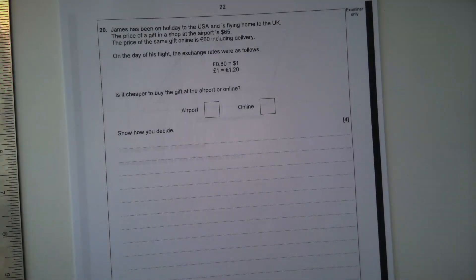Question 20. James has been on holiday to the USA and is flying home to the UK. The price of a gift in a shop at the airport is $65. The price of the same gift online is €60 including delivery. On the day of his flight, the exchange rates were as follows: 80 pence is equal to $1, £1 is equal to €1.2.